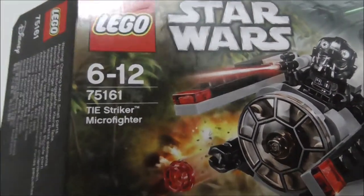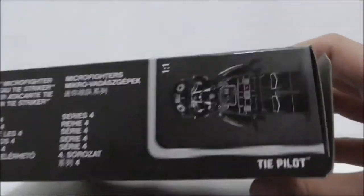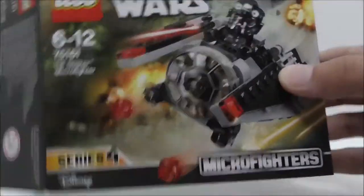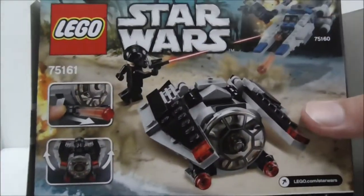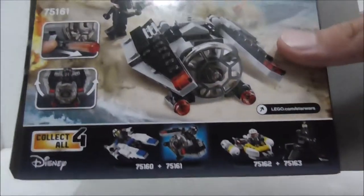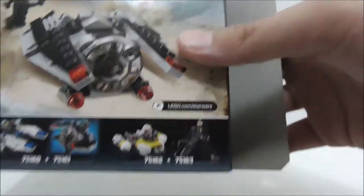This is set 75161 and it comes with the TIE pilot itself. It's from Series 4, and the back shows you all the features and the rest of Series 4.